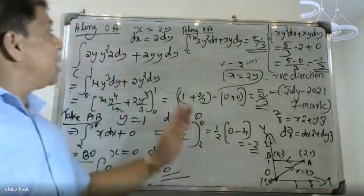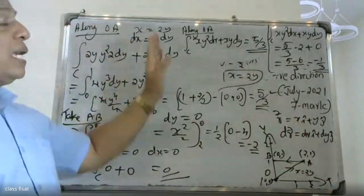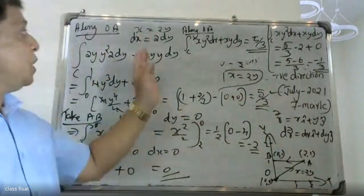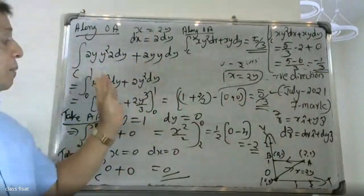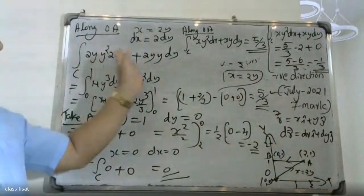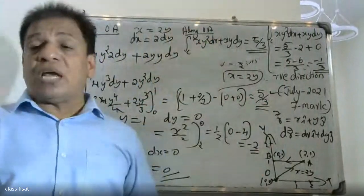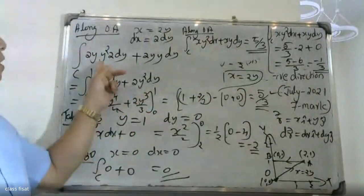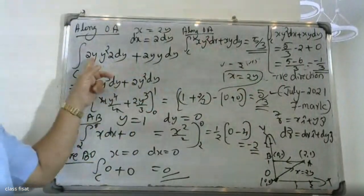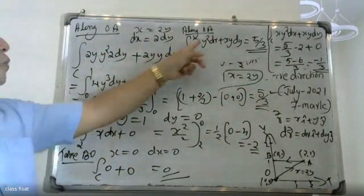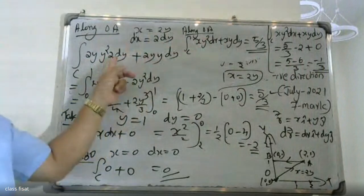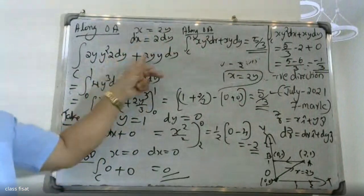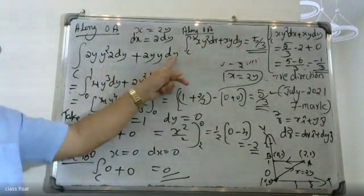When x equals 2y, dx equals 2 dy. The double integration gives 4y³ minus y³ by 3.